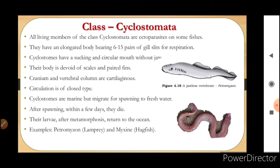Class Cyclostomata is present in division Agnatha. All living members of Cyclostomata are ectoparasites on some fishes, meaning they are present only on the outer surface of the host. They have an elongated body bearing 6 to 15 pairs of gill slits for respiration. Cyclostomes have a sucking and circular mouth without jaws, which helps in sucking nutrition. Their body is devoid of scales and paired fins.